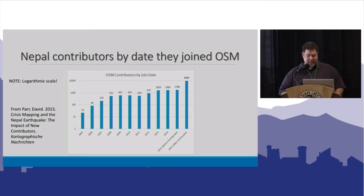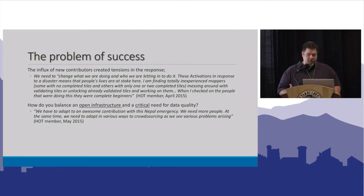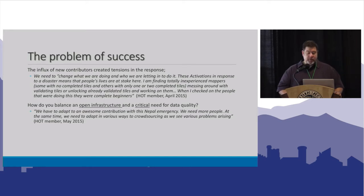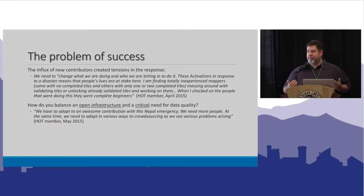The amount of response was pretty incredible from around the world, which is great — except it also creates a problem. At the time, the infrastructure wasn't there to accommodate that widespread amount of new users. Some discussions were thinking about how do we change what we're doing and who we're letting in. There was a category of people interested in maybe making sure that we don't allow novice mappers, who may not understand the issues of data quality, to map in the event of a crisis.